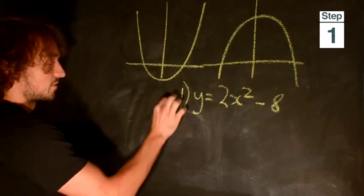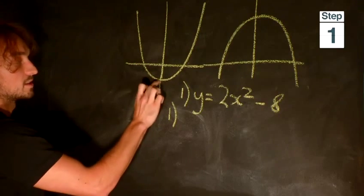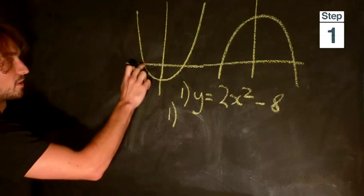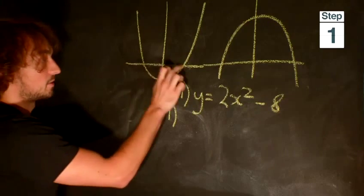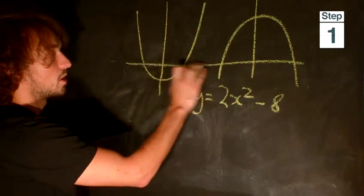So first things first, we need to find out where it crosses the x-axis and where it crosses the y-axis. First, we're going to find out where it crosses the x-axis. To do this, along this line, y equals 0.